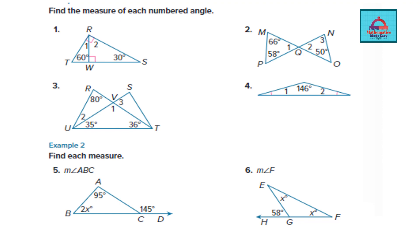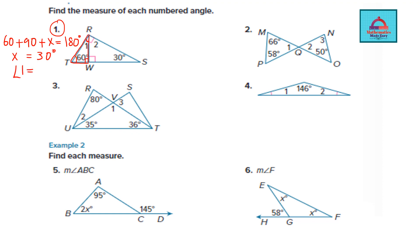Let's solve question 1 using the triangle angle sum theorem. First, look at the smaller triangle. We need to find angle 1. In this triangle, one angle is 60 degrees and another is 90 degrees. Taking angle 1 as x, we write: 60 + 90 + x = 180. Solving, x equals 30 degrees. So angle 1 is 30 degrees.